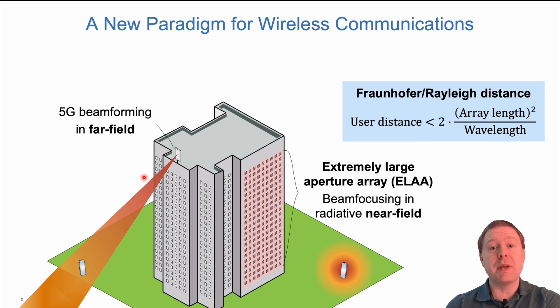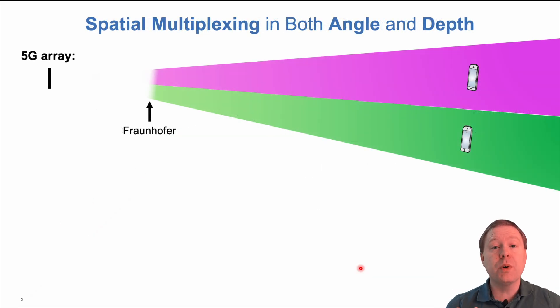The fact that signal beams look differently in the far field and near field has important implications for spatial multiplexing. Traditionally, with the 5G array, we are serving multiple users that are in the far field, beyond the Fraunhofer distance. Then we create these beams that start around at that distance and continue all the way towards infinity, serving users in different angles at the same time at the same frequency to get higher data rates.